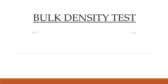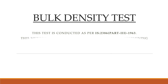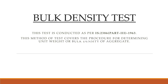Today we are performing a bulk density test as per IS 2386 Part 3 1963. This test is conducted to determine the unit weight or bulk density of aggregates. There are two types of bulk density: loose density and compacted density.